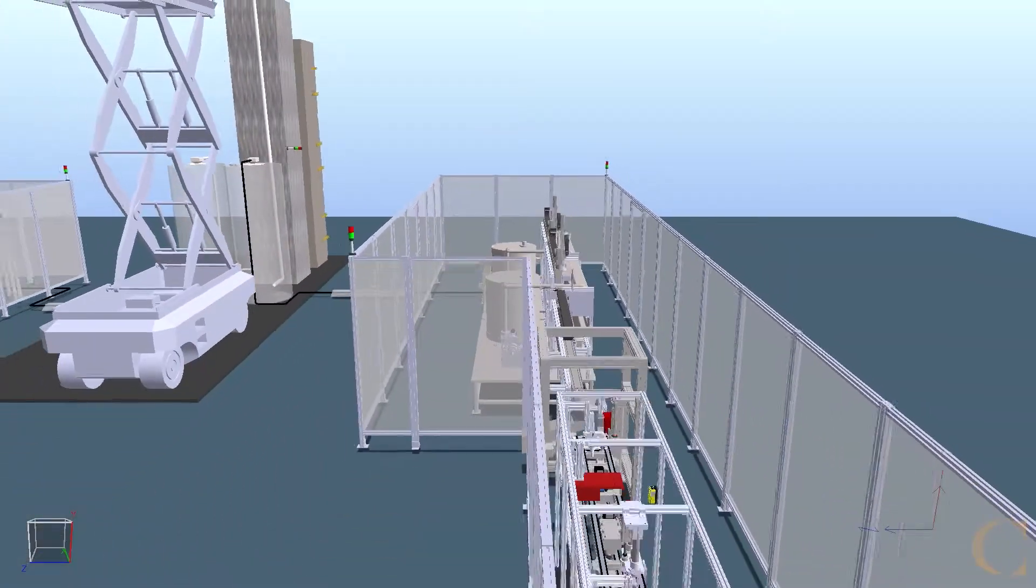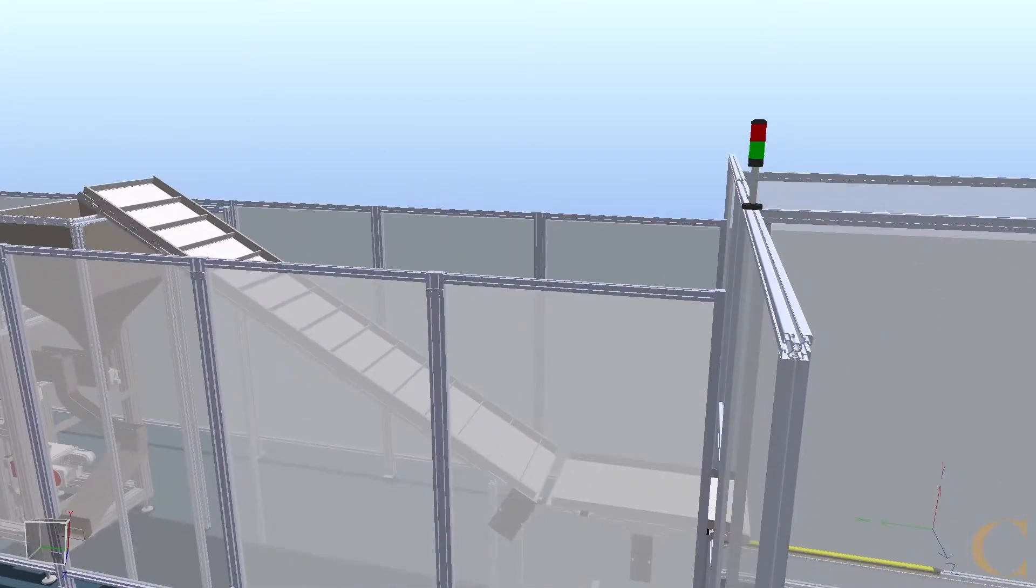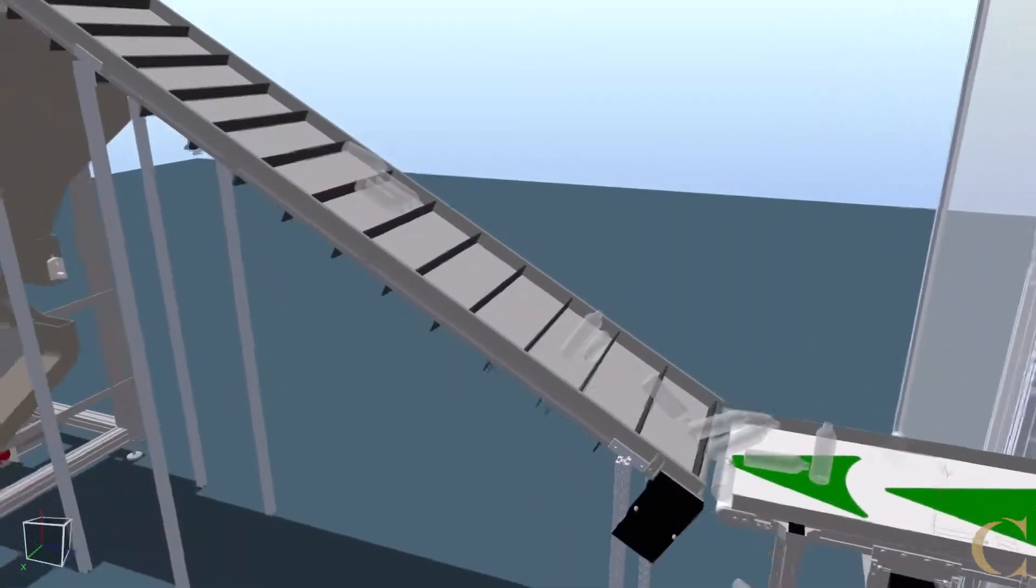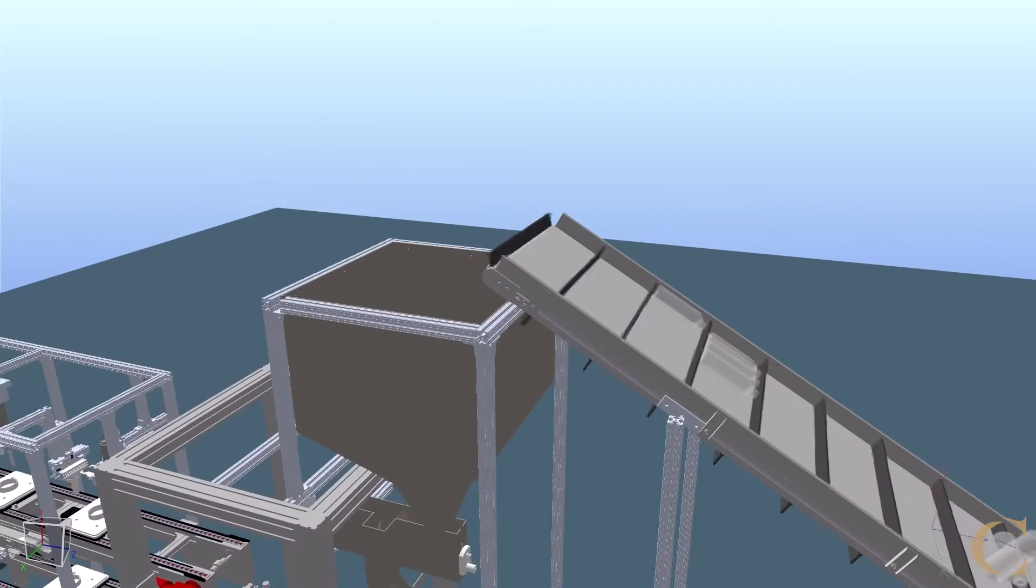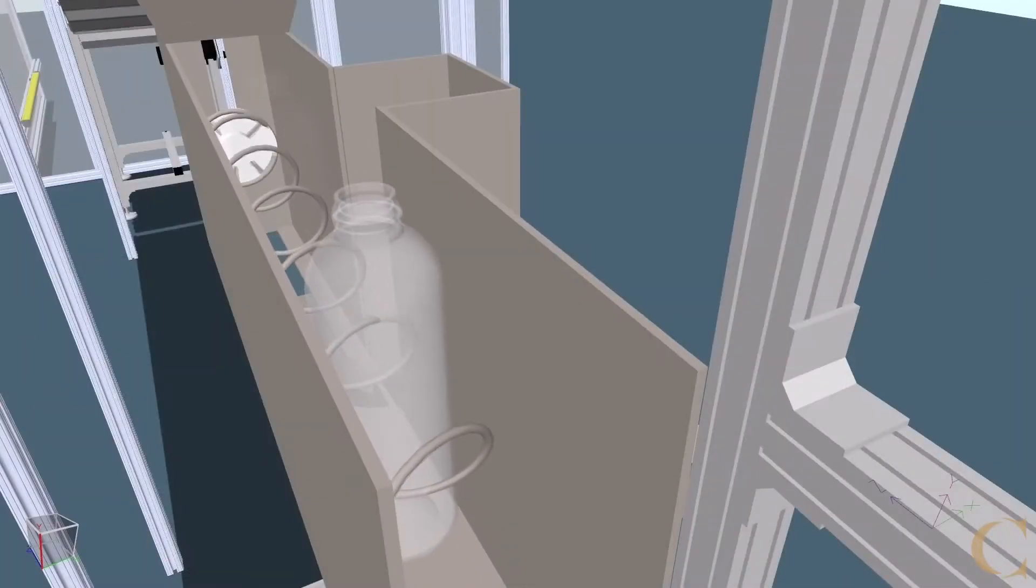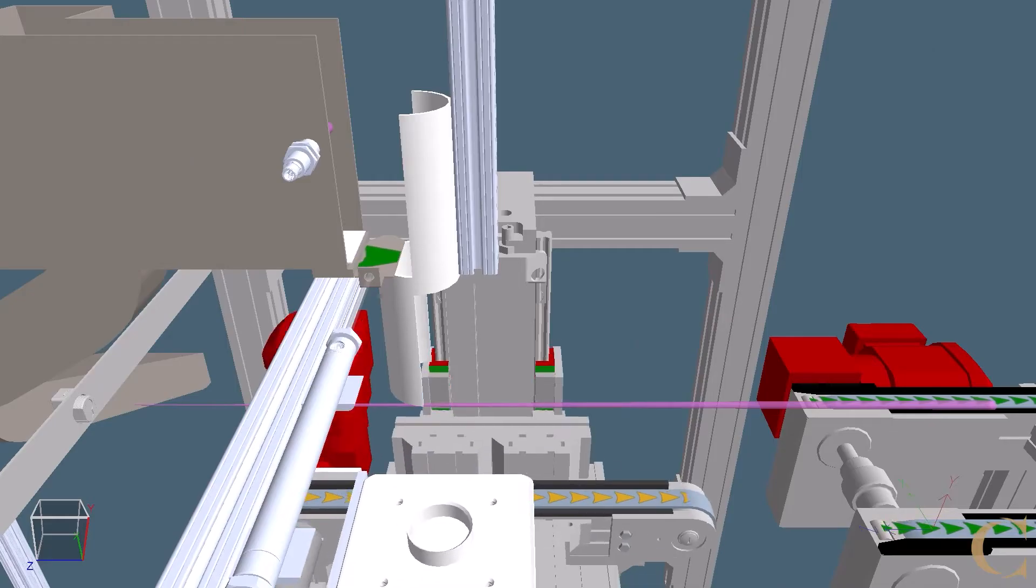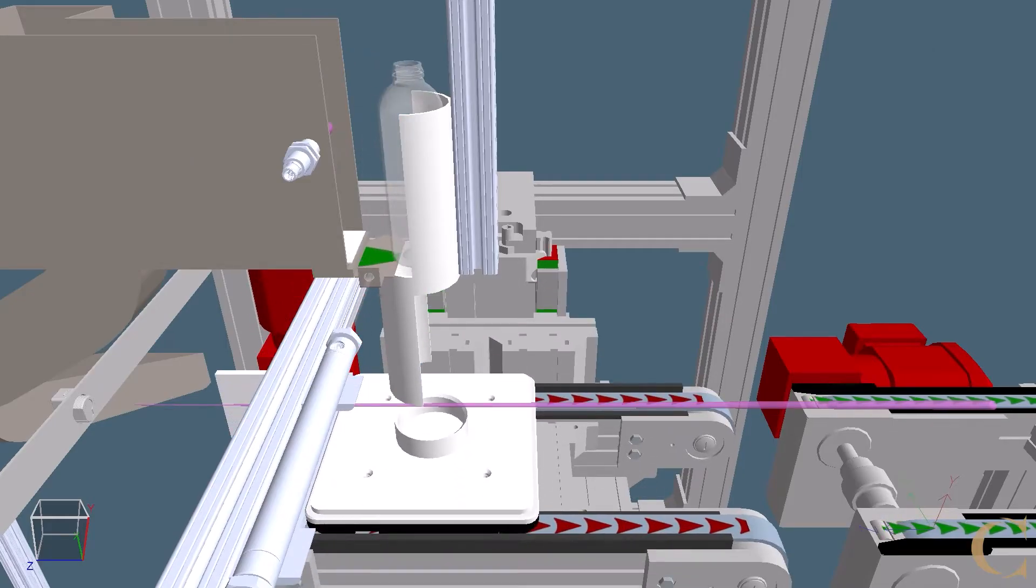The first step of the manufacturing process is bottle processing. The bottles are placed on a conveyor that leads to a cleated conveyor that conveys the bottles into a hopper located inside the cell. From the hopper, the bottles are singulated and placed onto a pallet that will carry it through the remaining stations.